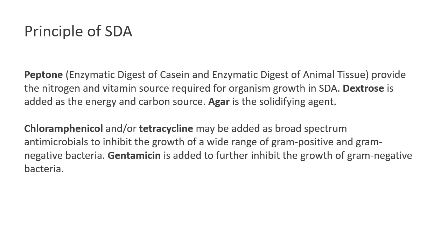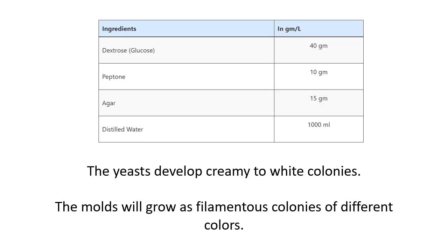If antibiotics are added, chloramphenicol or tetracycline can be used as broad-spectrum antimicrobials to inhibit the growth of a wide range of gram-positive and gram-negative bacteria. Gentamicin can be added further to inhibit gram-negative bacteria not inhibited by chloramphenicol or tetracycline. The simple composition includes dextrose, peptone, agar, distilled water, and in some cases an antibiotic.